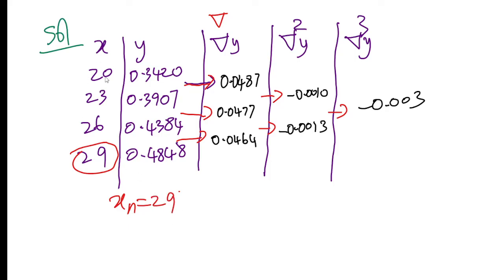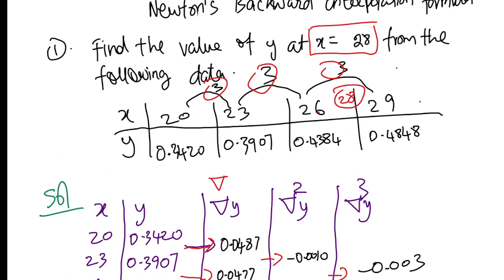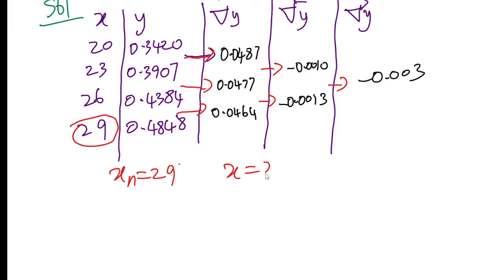xy is equal to 28, that's the x value. x values: 2.0, 2.3, 2.6, 2.9 - all difference in 3 is equal to 3, so h value is 3.